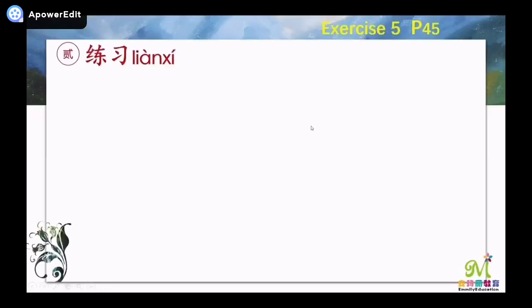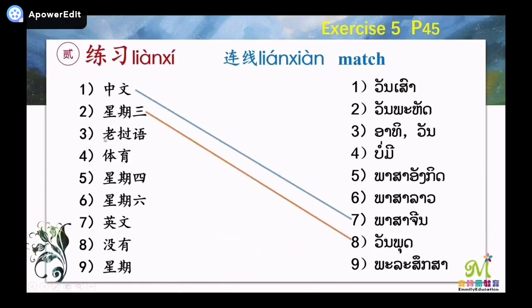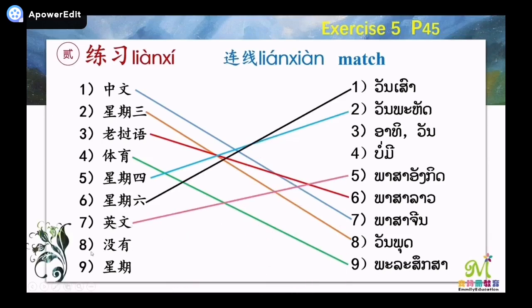The second exercise: Match. 一,中文 — Chinese. 二,星期三 — Wednesday. 三,老挝语. 四,体育 — PE. 五,星期四 — Thursday. 六,星期六 — Saturday. 七,英文 — English. 八,没有 — not have. 九,星期 — week. Very good.